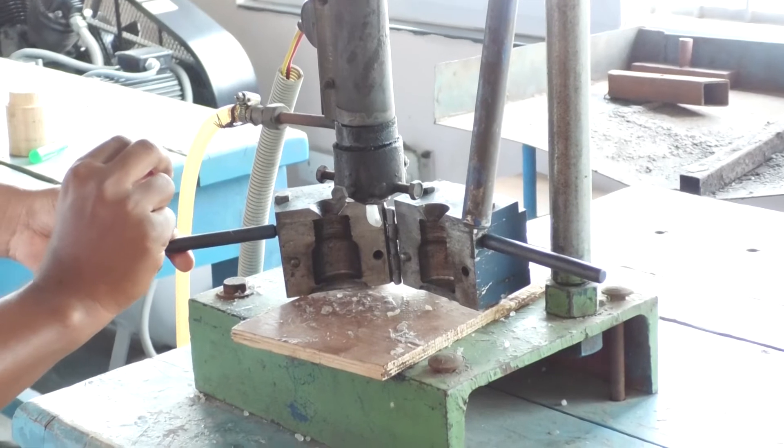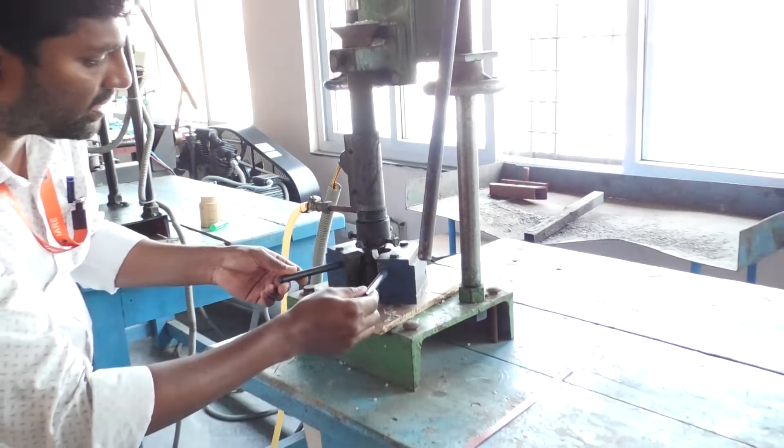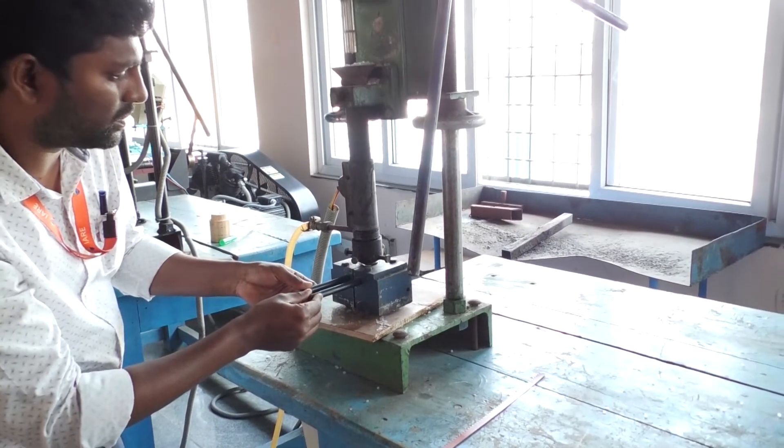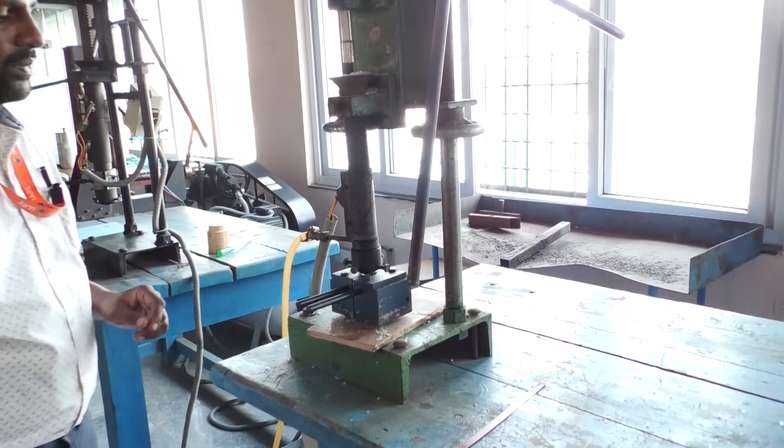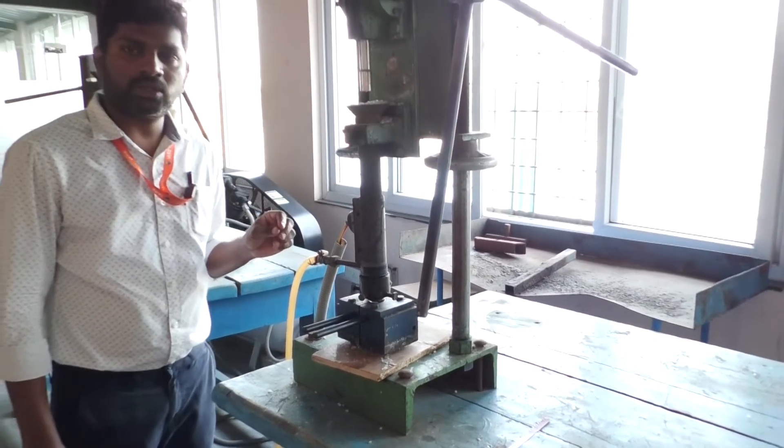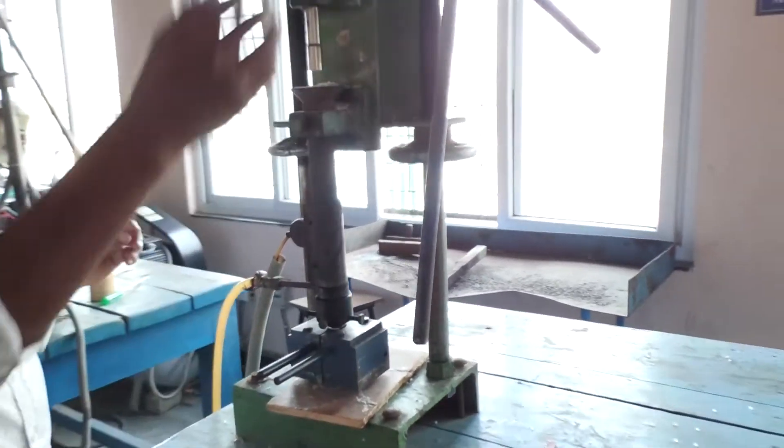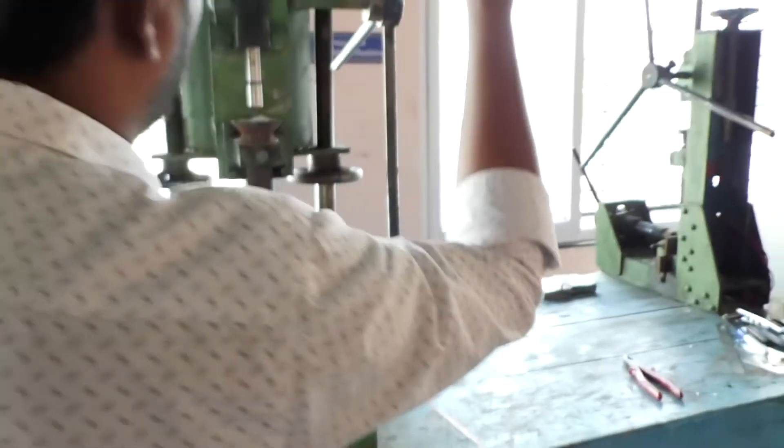If you close this die exactly to the nozzle and once you start the heating of the granules to 70 degree centigrade temperature, after heating slowly you have to press the ram.